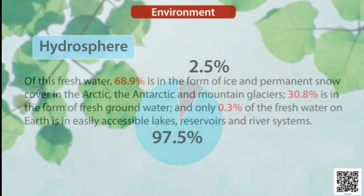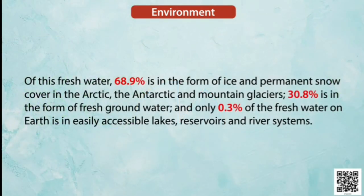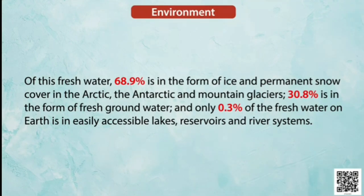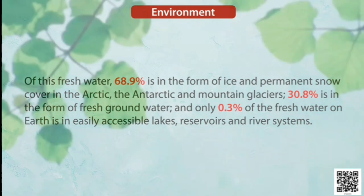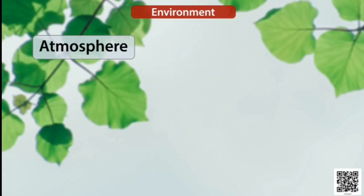Salt water accounts for 97.5% of the total water, whereas fresh water accounts for only 2.5%. Of this fresh water, 68.9% is in the form of ice and permanent snow cover in the Arctic, the Antarctic and mountain glaciers; 30.8% is in the form of fresh groundwater; and only 0.3% of the fresh water on earth is in easily accessible lakes, reservoirs and river systems.